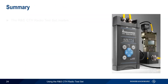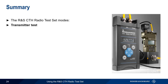In summary, the Rohde & Schwarz CTH radio test set can be used to verify the function and performance of radios and radio systems using four different test modes. In transmitter test mode, the CTH can measure a transmitter's frequency, forward and reflected power, and the resulting VSWR between transmitter and antenna.